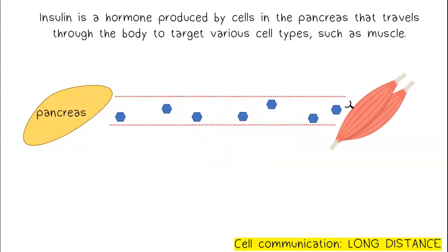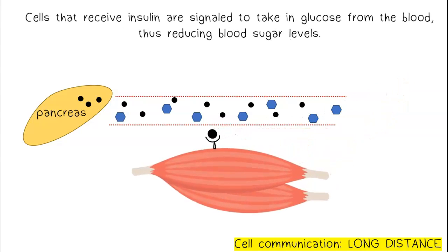Insulin is a hormone produced by cells in the pancreas that travels through the blood to target various cell types, such as muscle. Cells that receive insulin are signaled to take in glucose from the blood, thus reducing blood sugar levels.